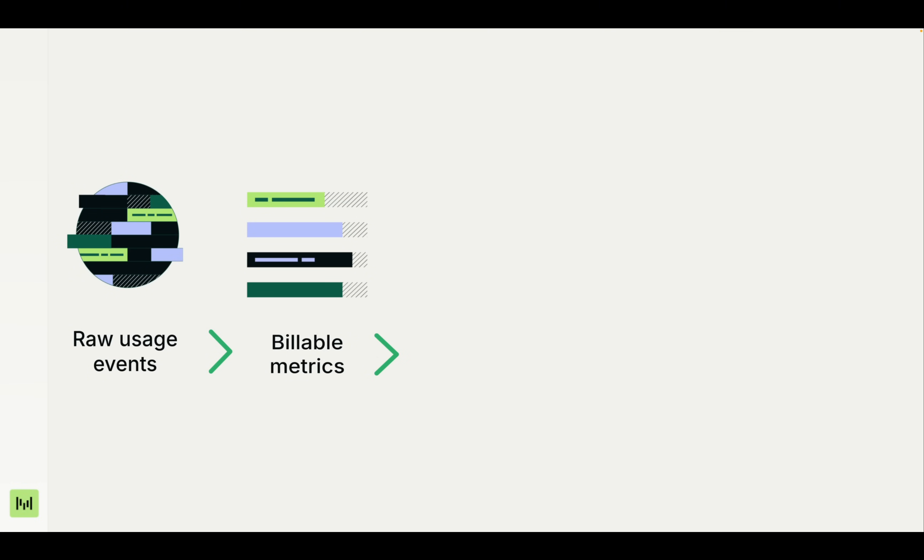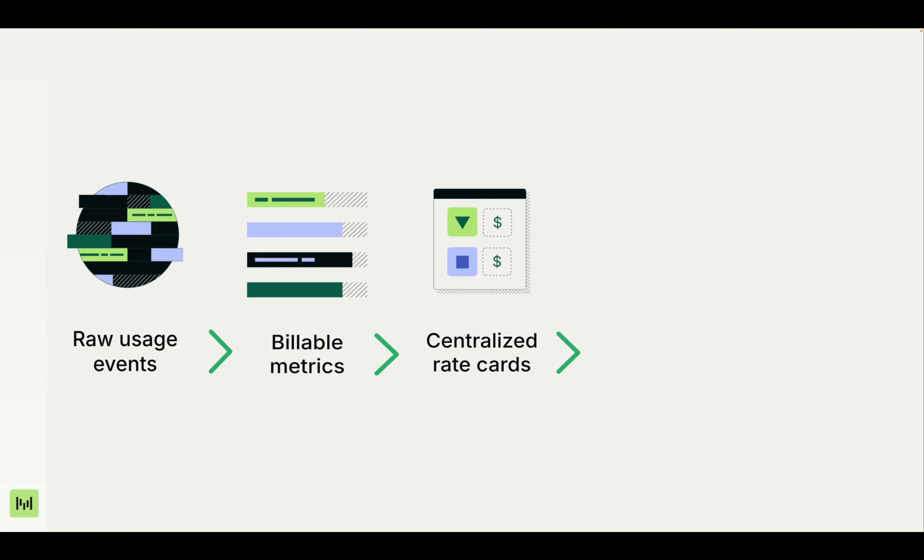Billable metrics turn those events into what you actually charge for, like counting total API calls or summing up storage. Your rate card is the single source of truth for pricing — update it once and it applies everywhere. You can even schedule price changes in advance.